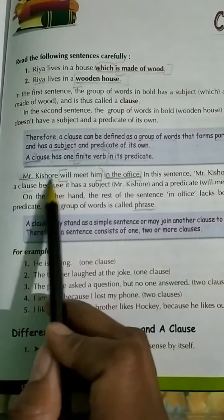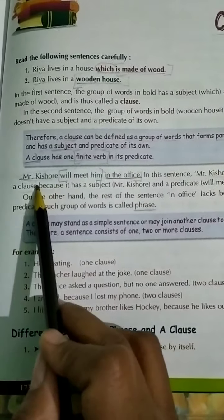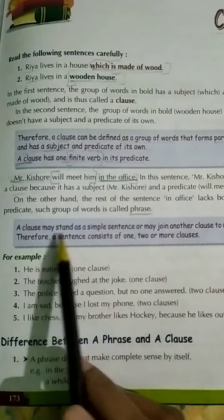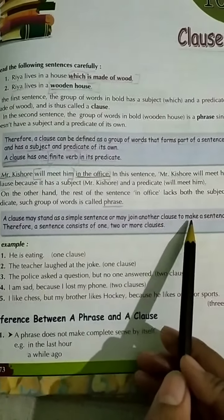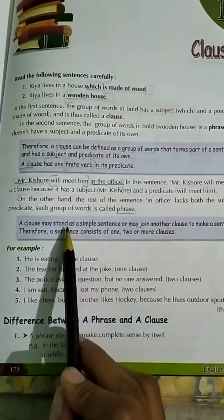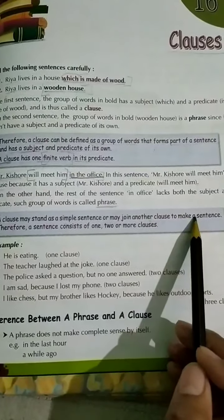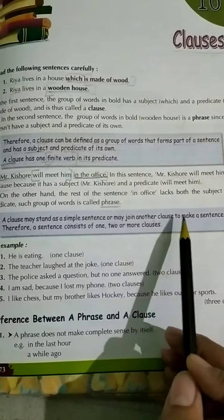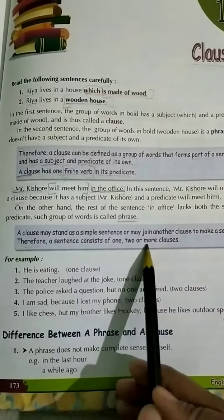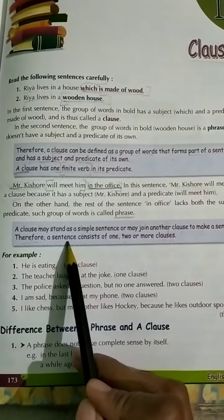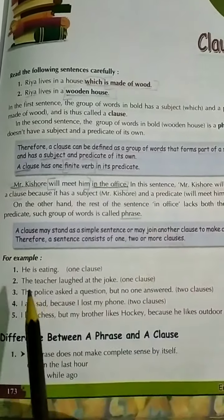The group of words which have a subject and a predicate of their own are known as clauses. A clause may stand as a simple sentence or may join another clause to make a sentence. Therefore, a sentence may consist of one, two, or more clauses.